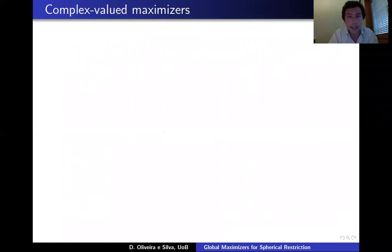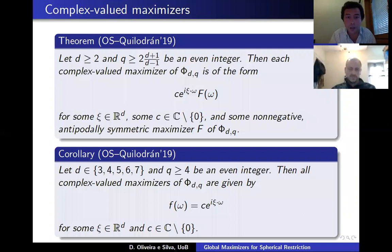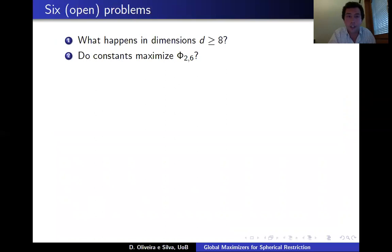Regarding complex-valued maximizers: once real-valued extremizers are characterized, complex-valued extremizers are easily described — they are a complex multiple of a character times a non-negative antipodally symmetric maximizer. The talk concludes with a list of six open problems. Thank you very much.